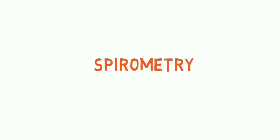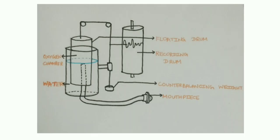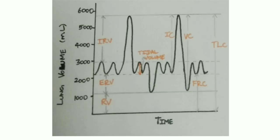Spirometry is the device used to measure lung functions. In this picture you can see a basic spirometry device with a mouthpiece through which you blow air. It's connected to a container with water and a floating drum with an oxygen chamber inside. A counterbalancing weight is attached to the floating drum, connected to a recording drum. As you blow air in and out, the floating drum moves and produces a spirometry recording.